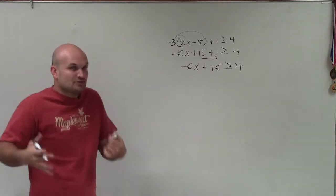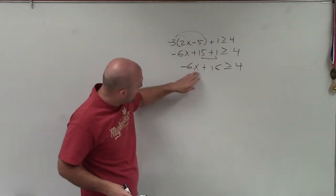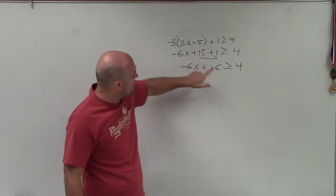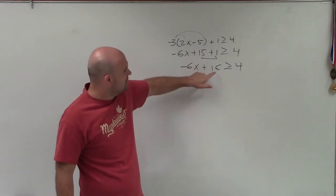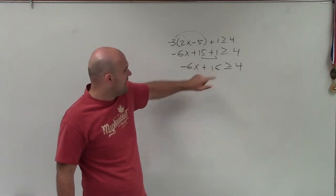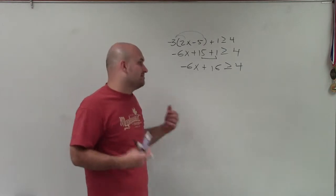All right, so now I have this as a two-step inequality. You can look at my variable x. You can see it's being multiplied by negative 6, as well as being added by 16.